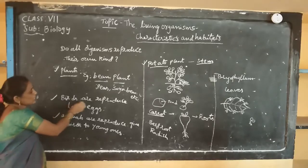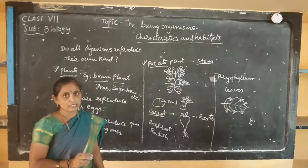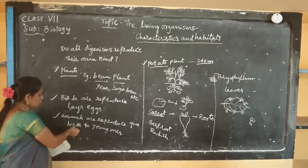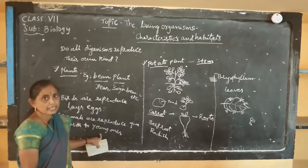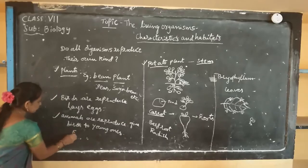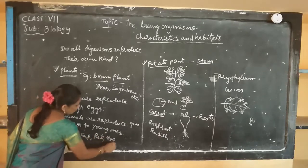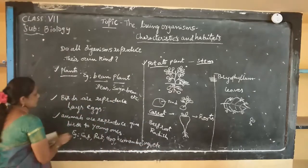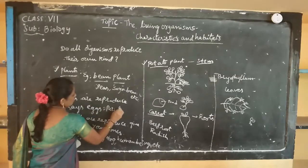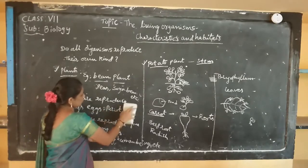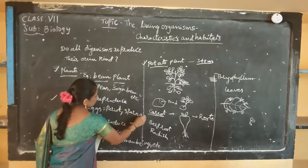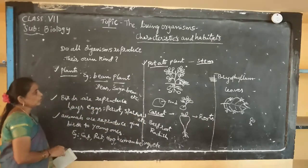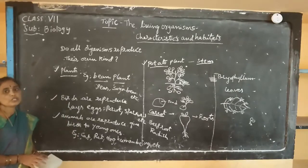Even animals like birds — birds lay eggs in the nest. In some days the eggs are hatched and the young ones come out. Some animals give birth directly to young ones — for example, cat, rat, dog, and even human beings. Birds like parrots and swallows reproduce through eggs. This is about how all organisms reproduce their own kind.